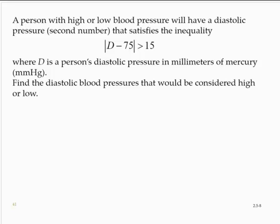A person with high or low blood pressure will have a diastolic pressure, that's the second number, that satisfies the inequality absolute value of d minus 75 is greater than 15, where d is a person's diastolic pressure in millimeters of mercury. Find the diastolic blood pressures that would be considered high or low.